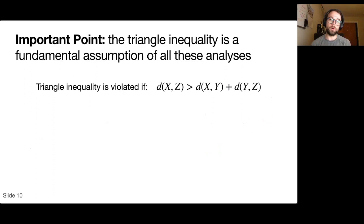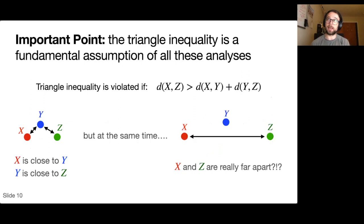For example, if the triangle inequality were violated, we could get into situations where animal X is close to Y and Y is close to Z, but at the same time, animals X and Z are very far apart. This kind of leads to contradictions in things like clustering, where you would like to put X and Z in different clusters, but at the same time, you want to put X and Y in the same cluster and Y and Z in the same cluster. This is why the triangle inequality becomes important.